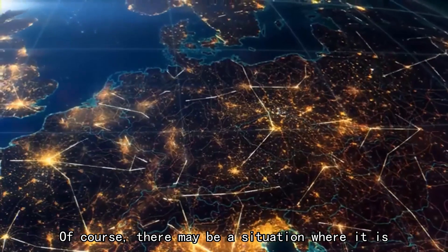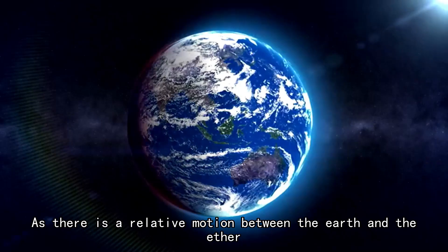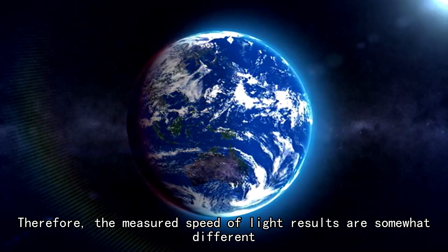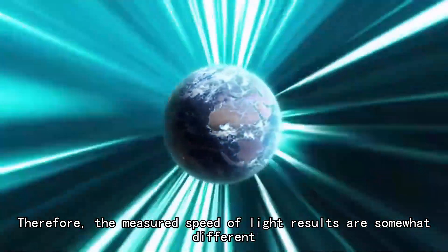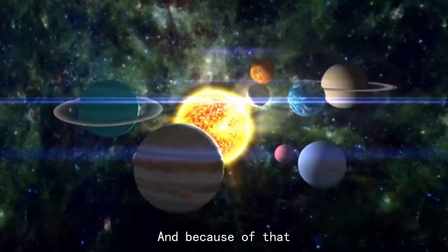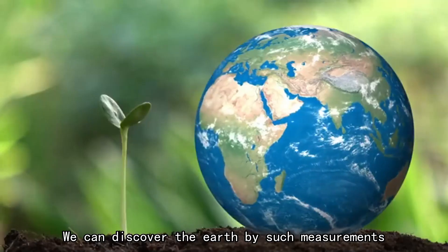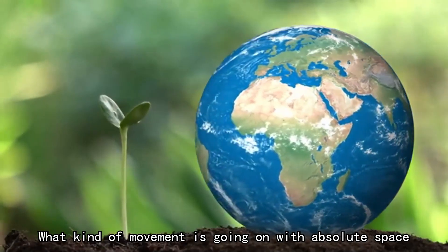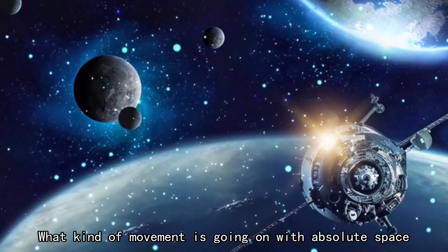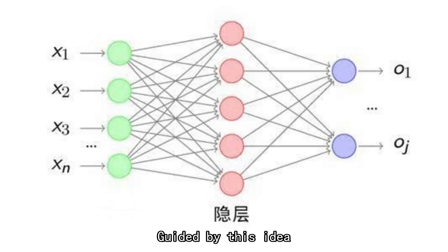Of course, there may be a situation where there is a relative motion between the earth and the ether. Therefore, the measured speed of light results are somewhat different. And because of that, we can discover by such measurements what kind of movement the earth is going on with absolute space. Guided by this idea, Michelson and Morley began their experiments.